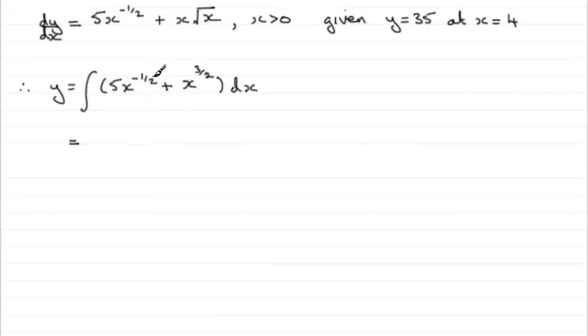So for 5x to the minus a half, just add 1 to the power, so minus a half plus 1 is a half, and divide by the new power. So that's going to be all divided by a half.